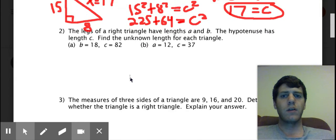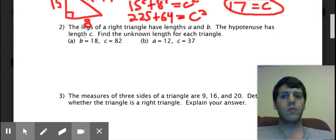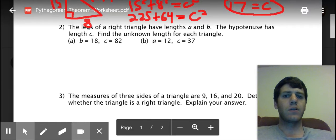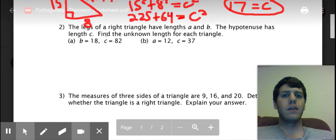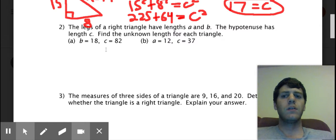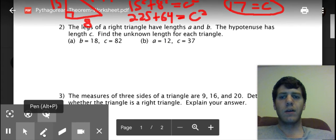Okay, for number two they tell you you have two different problems, a and then b. The legs of right triangle have lengths a and b and the hypotenuse has the length c. Find the lengths of the unknown. So in the first one they give you b and c, so they give you one leg in the hypotenuse and you need to find the other leg. Okay and we can go through that one, we'll do one of them, we're not going to do both.